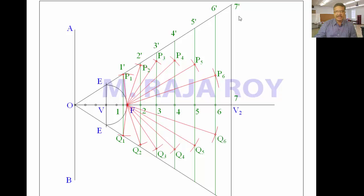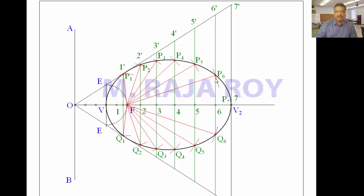Finally, take 7–7 dash as radius with F as center and draw an arc; this intersection point is P7. Now draw a smooth freehand curve joining V, P1, P2, P3, P4, P5, P6, P7, Q6, Q5, Q4, Q3, Q2, Q1, and back to V. This completes the ellipse.